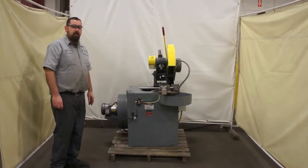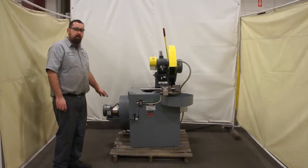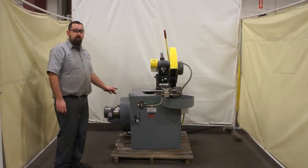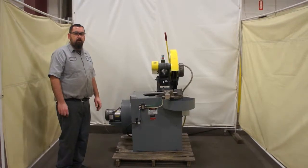This is a 10 horsepower Everett Abrasive Cut-Off Saw with a 1 horsepower dust collector. This can be wired 220 or 440. It's currently wired for 440.